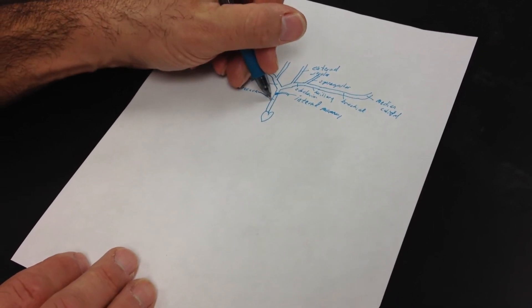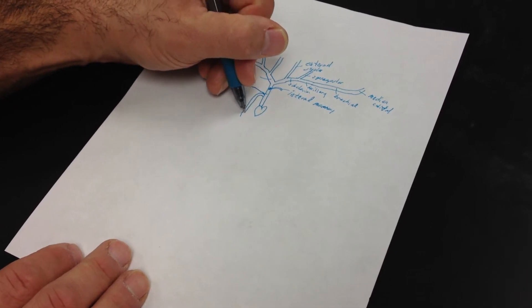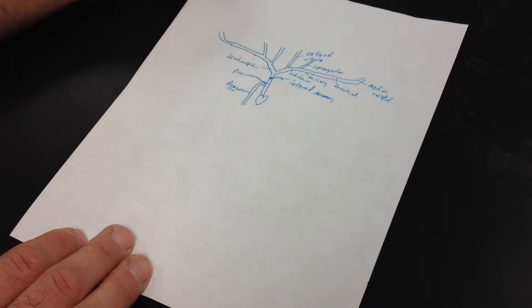And then we have another vein. This is our pre-cava. And we have another vein coming off and going straight down. This is the azygous vein.